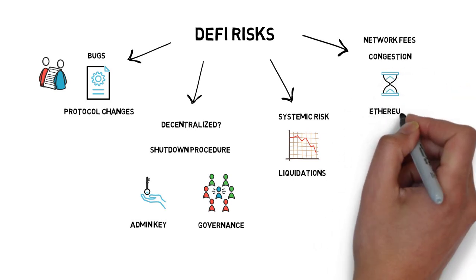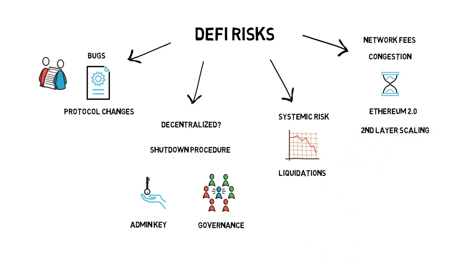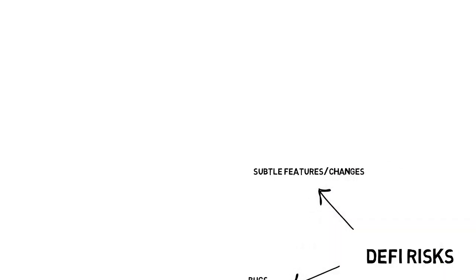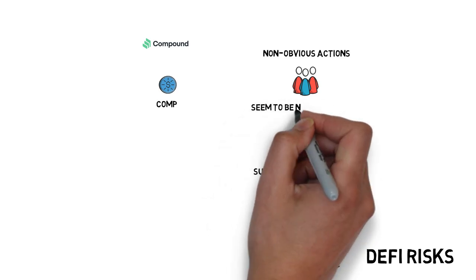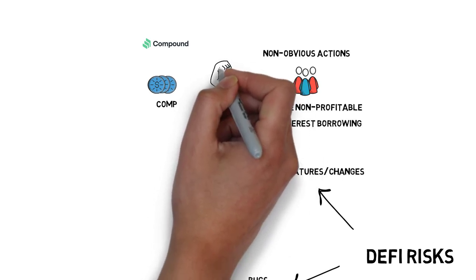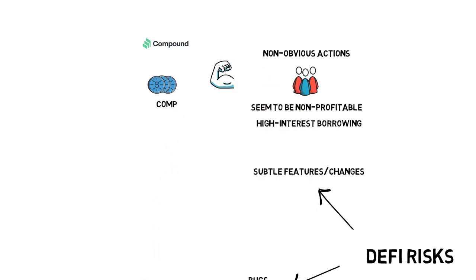Upcoming Ethereum 2.0 and second layer scaling solutions can help to solve this problem. There is also a set of more subtle features or changes that applied to one of the protocols may incentivize users to certain non-obvious actions that can cascade across multiple protocols. A good example of something like that would be a recent distribution of COMP tokens in the Compound protocol that caused users to get into seemingly non-profitable high-interest borrowing that was actually profitable due to being rewarded in the additional COMP tokens. Even though situations like that can be quite dangerous, they make the whole ecosystem stronger and less vulnerable to similar situations in the future.